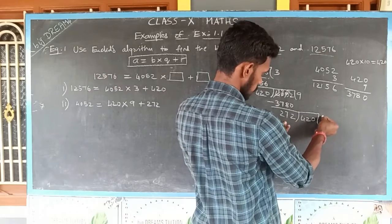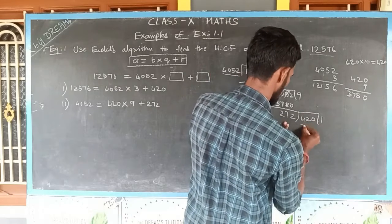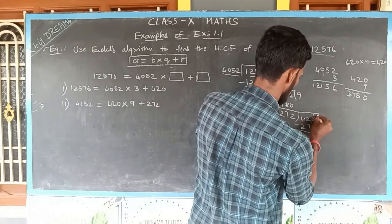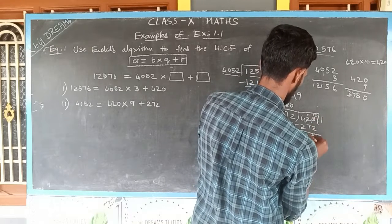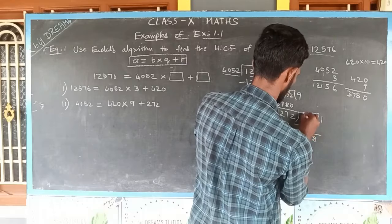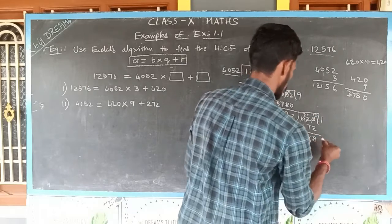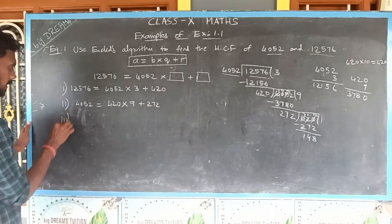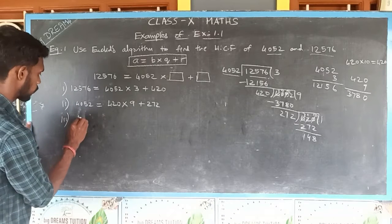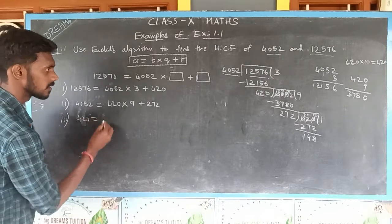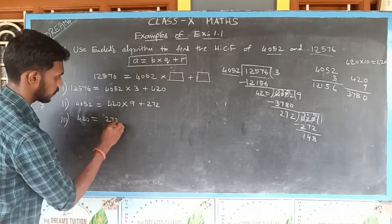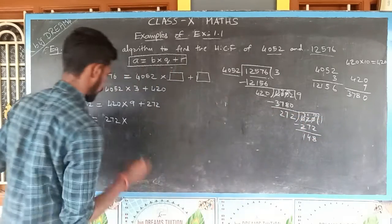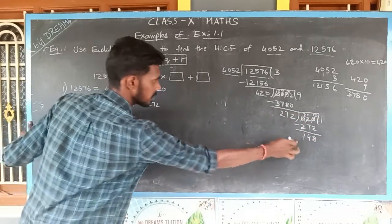When we divide 420 by 272, the quotient is 1. So 1 × 272 = 272. Subtracting: 420 − 272 = 148. I am getting 148 as the remainder. So in the third step, 420 = 272 × 1 + 148.